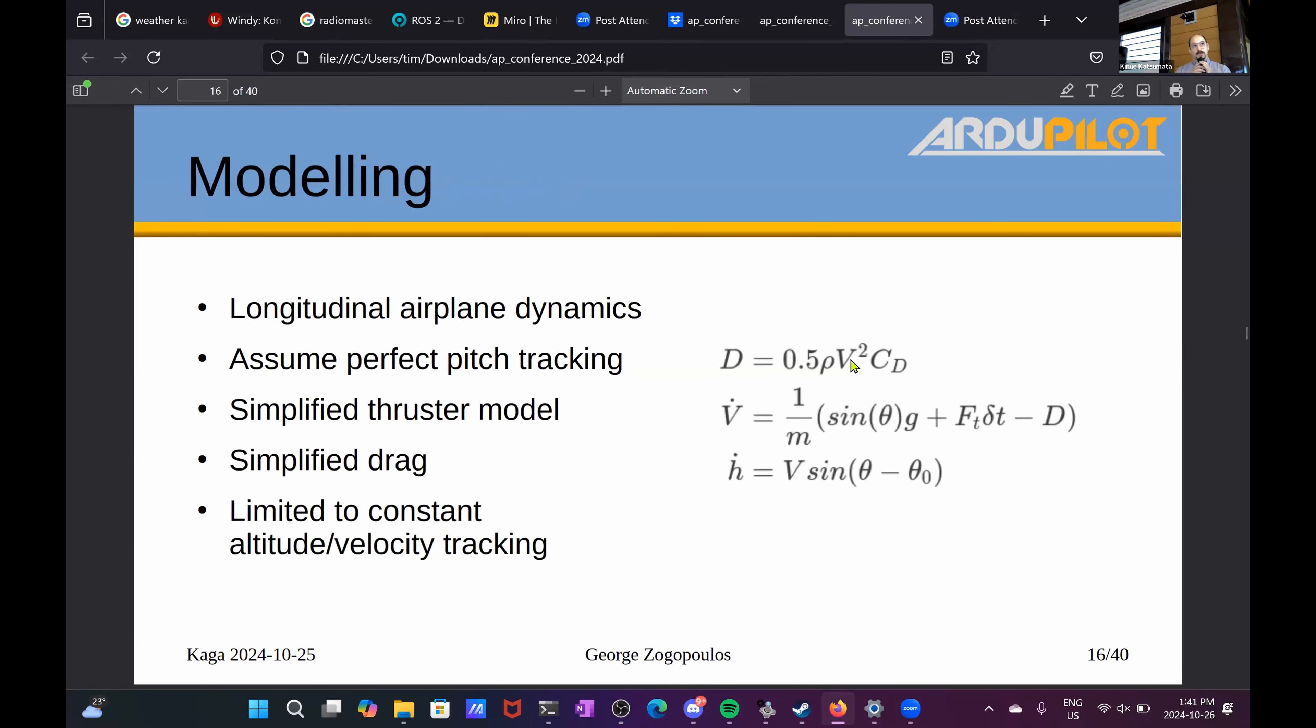So as with any control problem, we'll start with our model. For this, we're going to need only our longitudinal airplane dynamics. We're going to assume a really good pitch tracking for today. We're going to use a very simplified thruster model, it's FT times delta T, constant force modulated with our throttle signal.